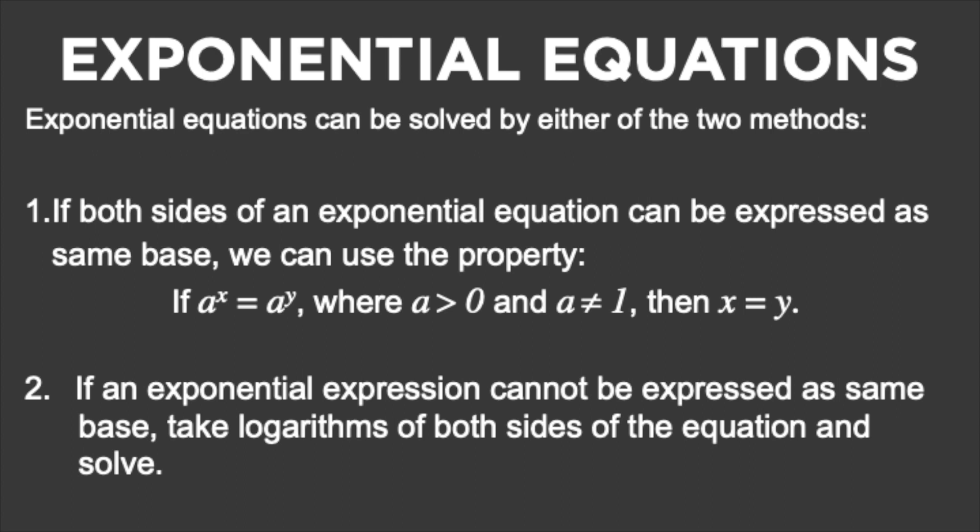Exponential equations can be solved by either of two methods. First, if both sides can be expressed as the same base, we use the property: if a^x = a^y where a > 0 and a ≠ 1, then x = y. Second, if they cannot be expressed as the same base, take logarithms of both sides. One-sided exponential equations use Method 2; two-sided use Method 1.